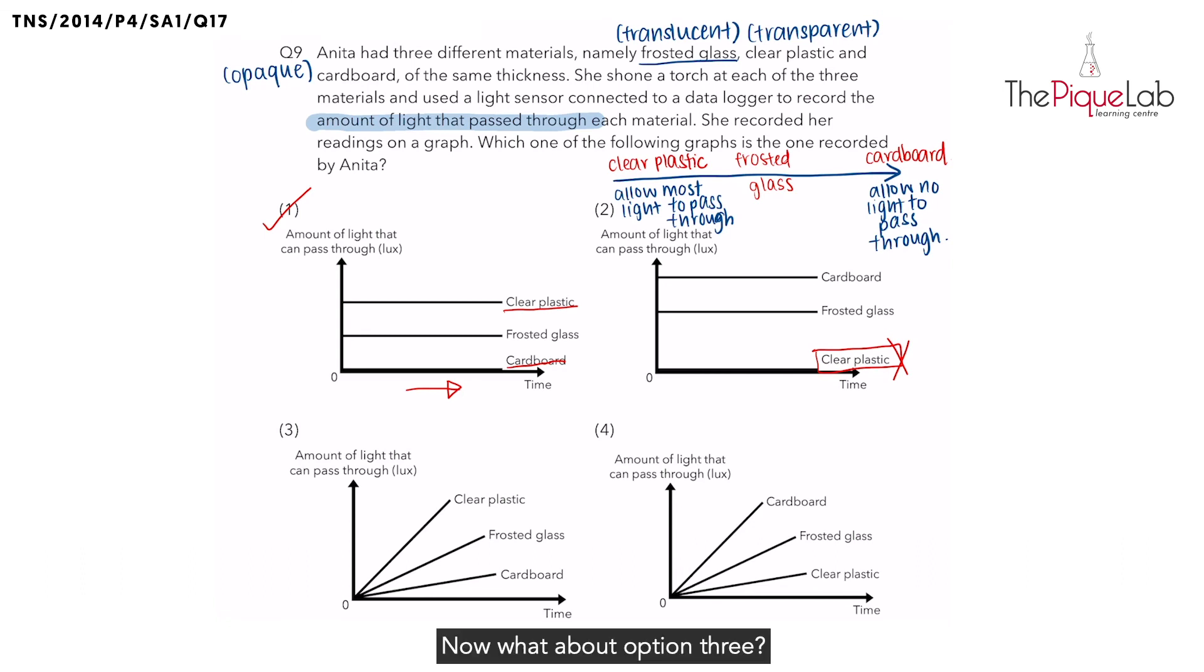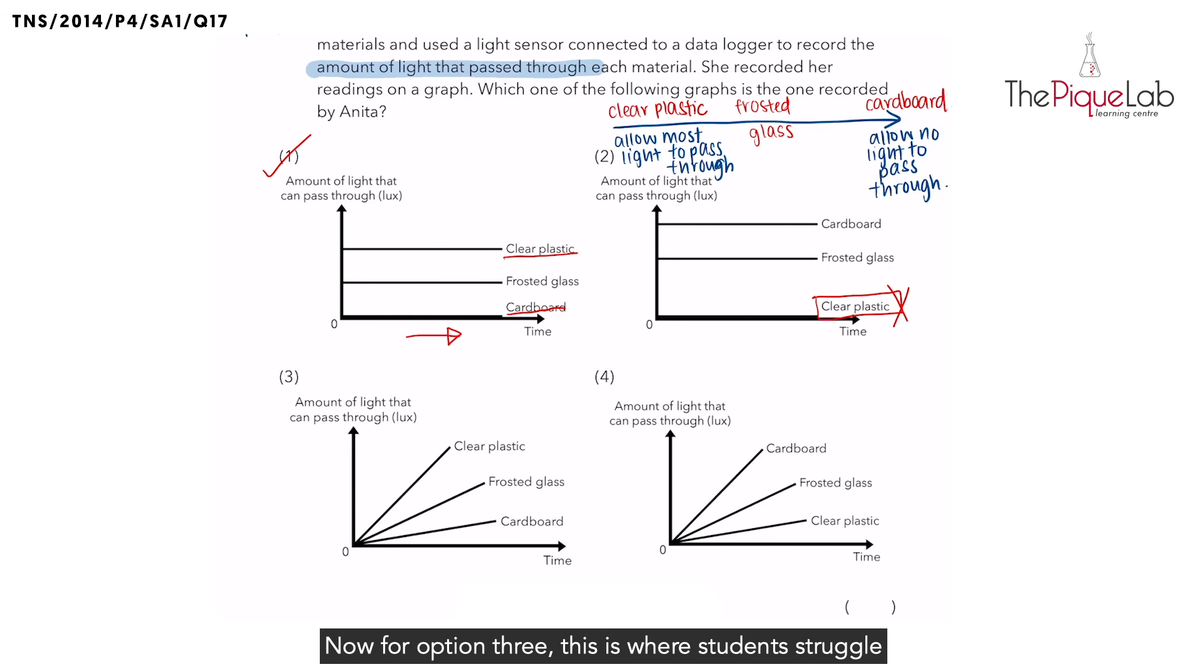Now what about option three? This is where students struggle to understand the question, and most of them actually pick option three. So what is option three trying to tell you? It's saying, let's focus on just cardboard. They're telling you that as time passes, the cardboard would actually allow more and more light to pass through.